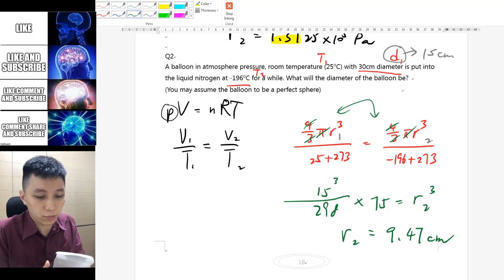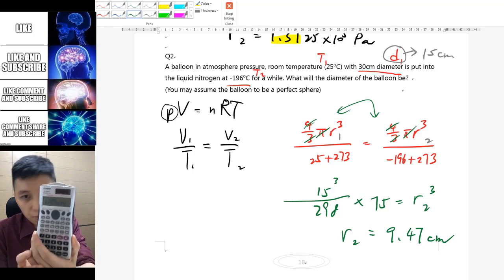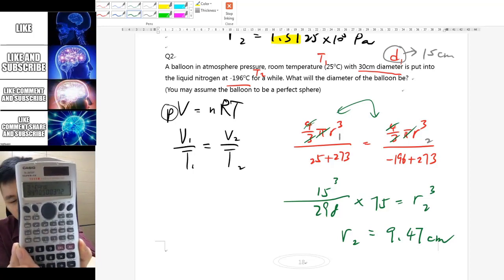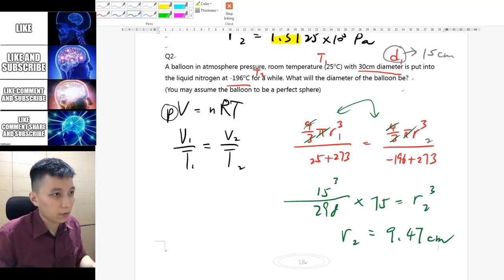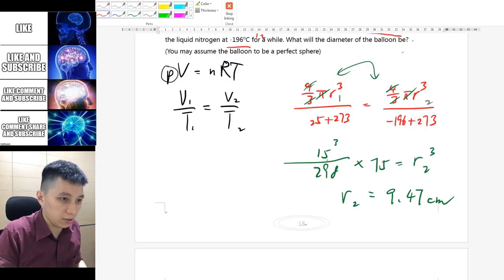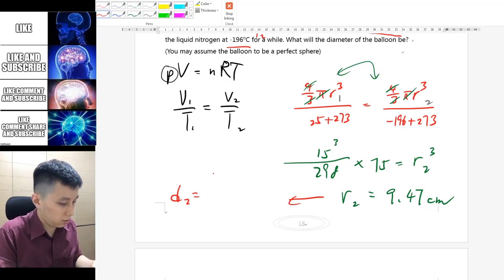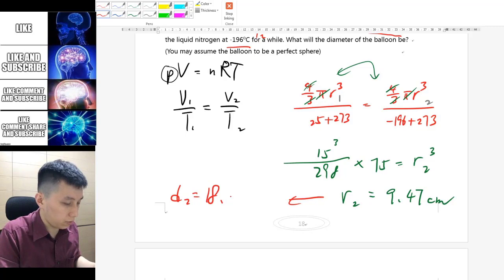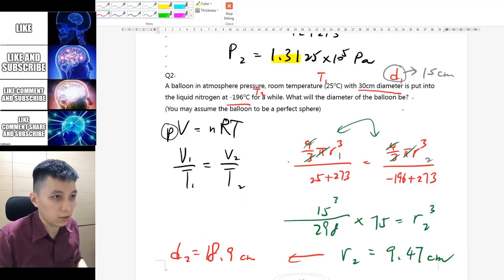If you don't know how to do the cube root then it depends on your calculator. But it's asking diameter, so we'll have to change it back to d2, which is 18.9 cm, so obviously it's much smaller.